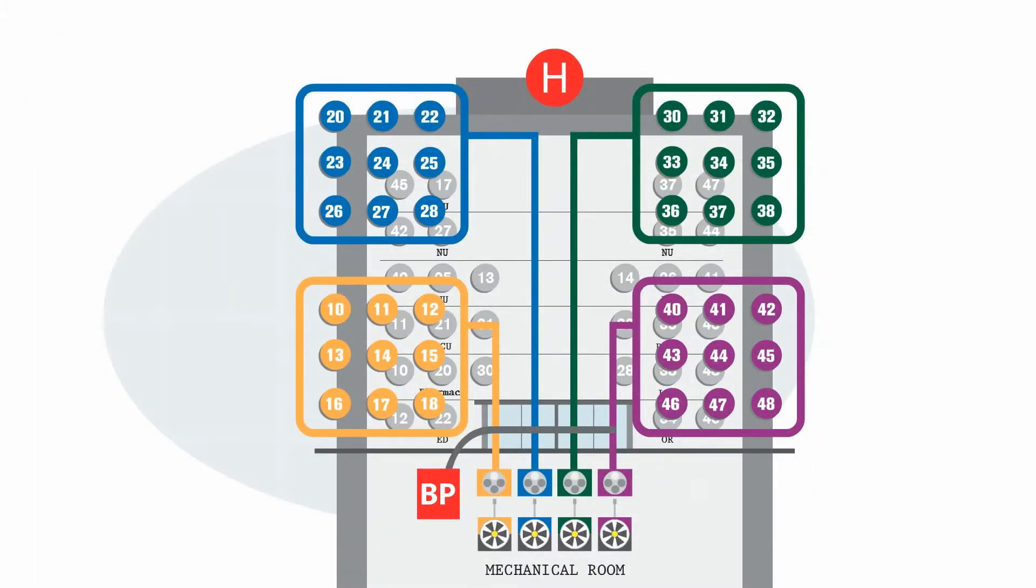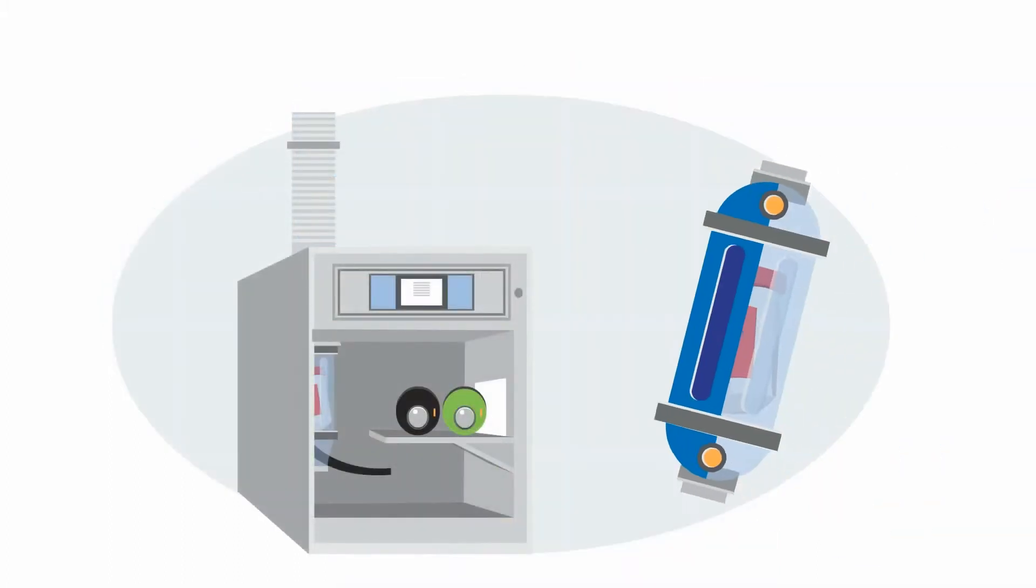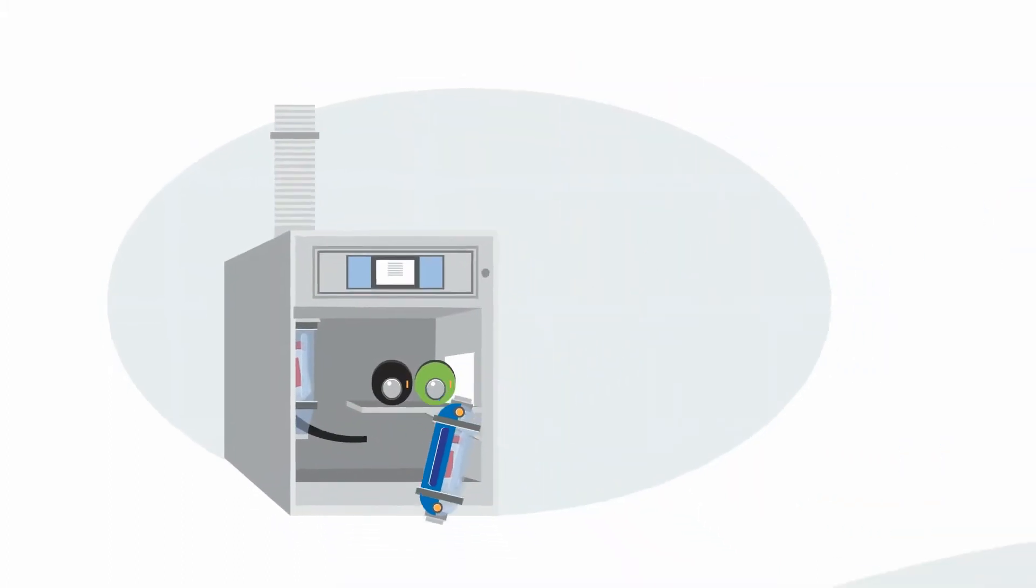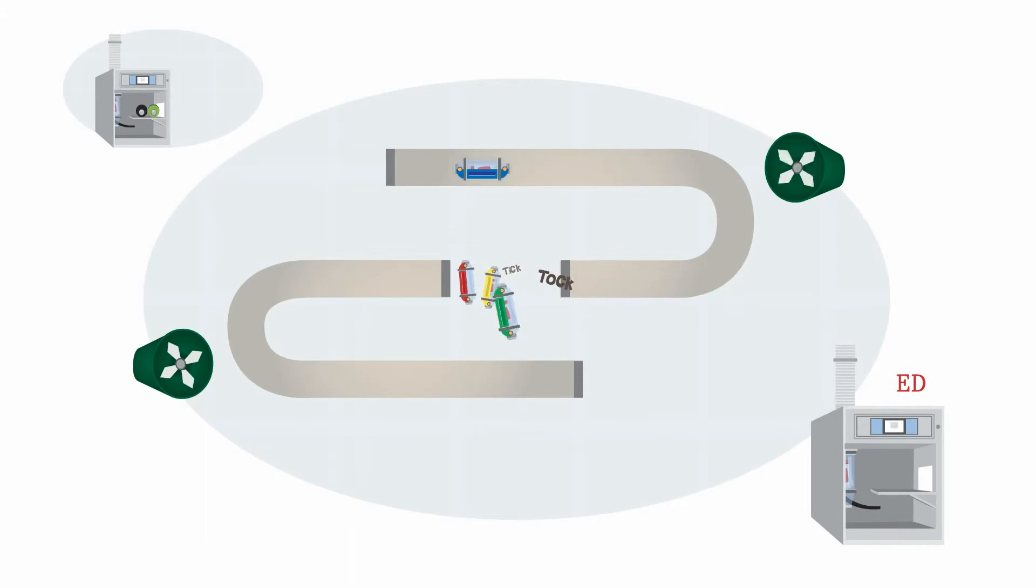Bypass systems are similar, but they include a storage area. A carrier is vacuumed away from its origin station, only to be parked. Carriers wait in the bypass until routes become available.